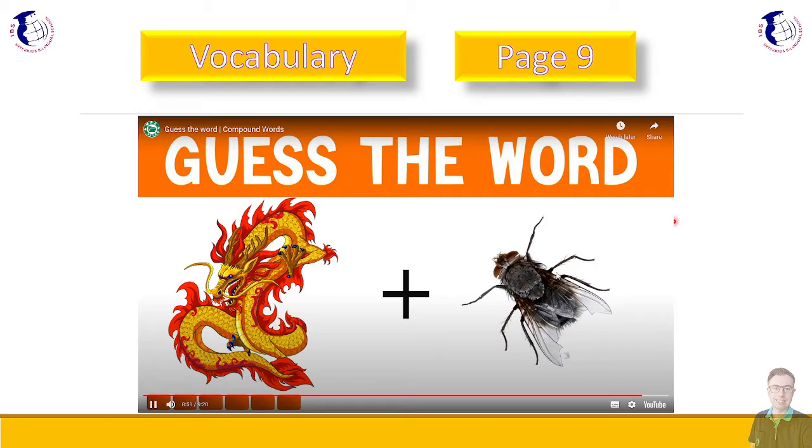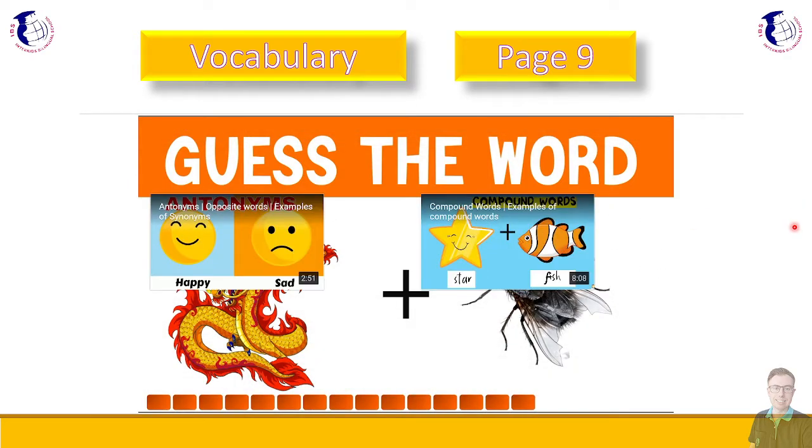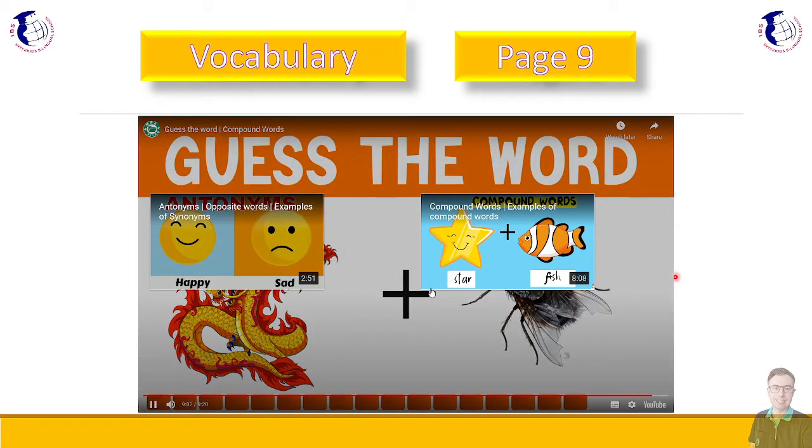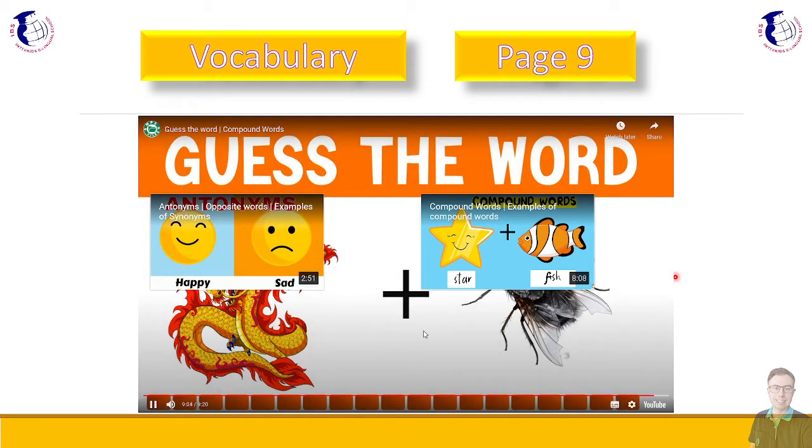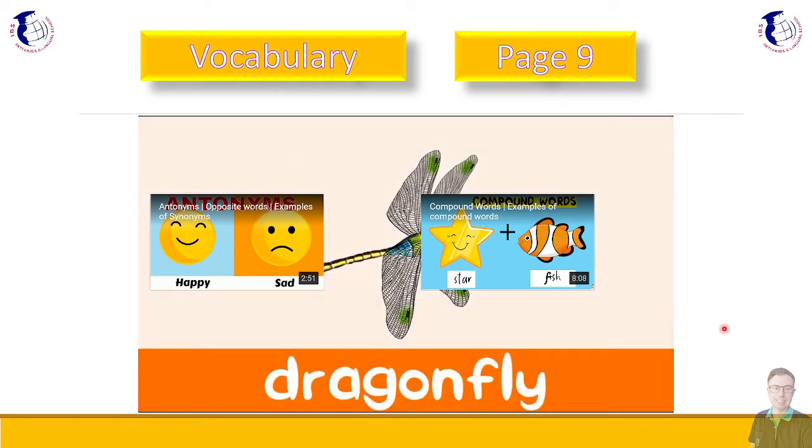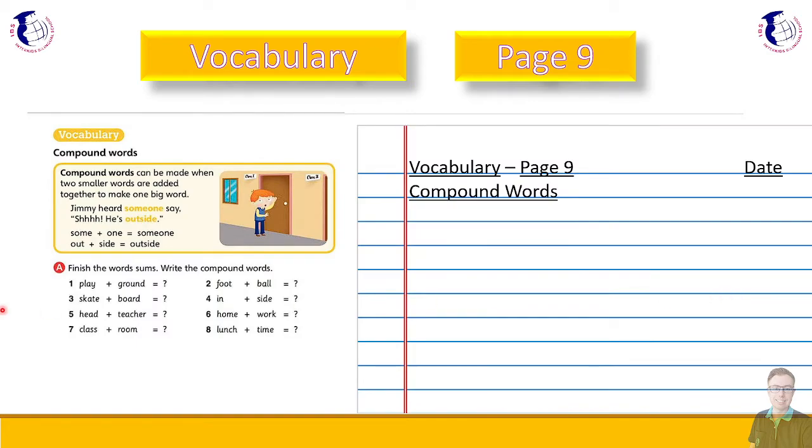Hmm. Two animals. One is rather a mythical creature. And the other is a very small insect. Put the two words together. And you have a dragonfly. And that was the last one.